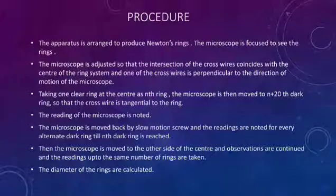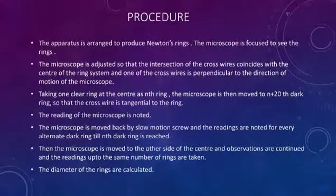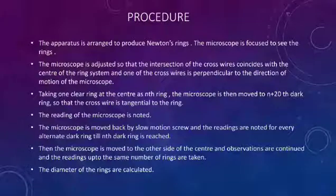Then the microscope is moved to the other side of the center and observations are continued, with readings taken up to the same number of rings. The diameters of the rings are calculated.